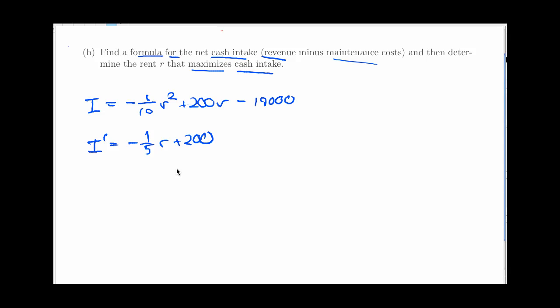And I'm going to use the derivative to find the critical numbers, which would be places where the derivative is 0 or undefined. The derivative is a linear function, so it's never undefined. That's not an issue. So I've just got to set this equal to 0. And so that means that one-fifth R equals 200 or R equals $1,000.